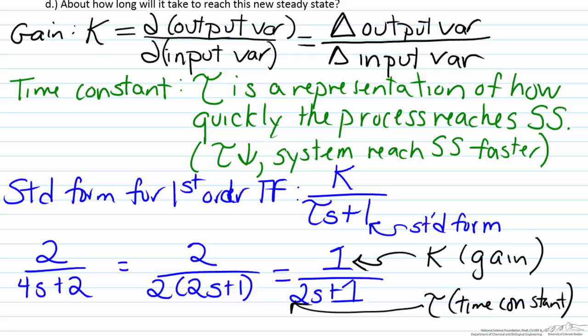If you are developing your own first order transfer function from a material or an energy balance, a good check to make sure that what you have done is correct would be to note the fact that your time constant would have to have units of time. However, the units of the gain are drastically different depending on the transfer function you are analyzing.